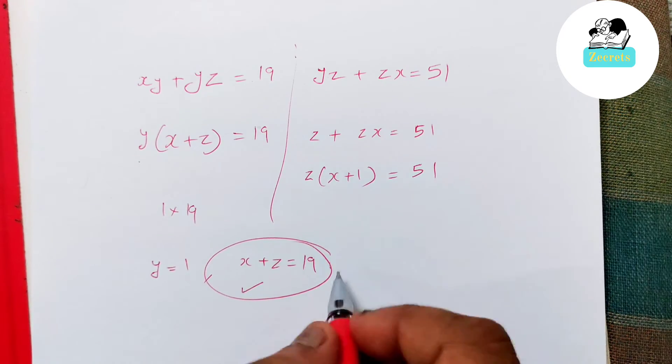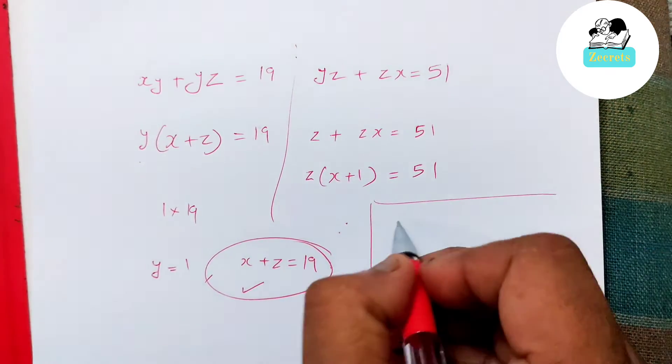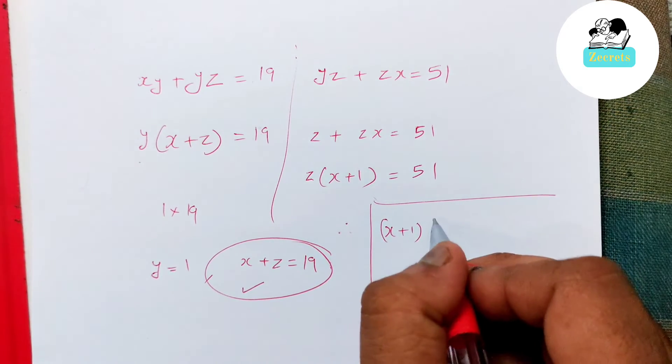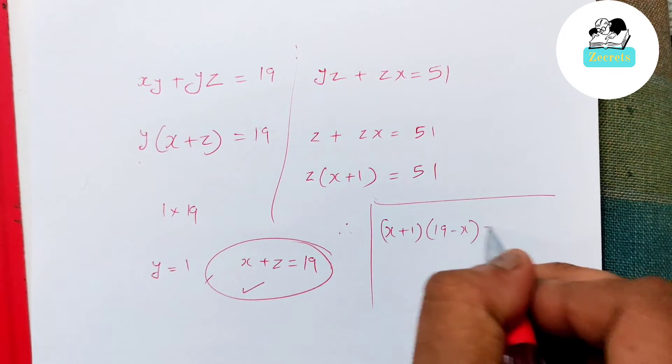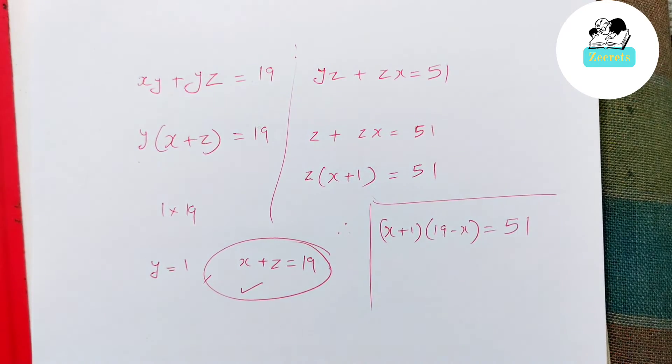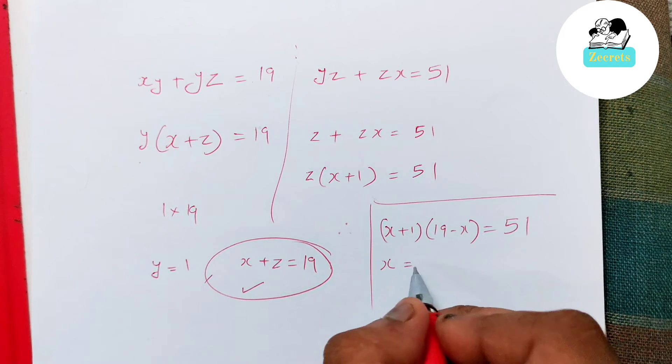So z can be replaced in terms of x. Z can be written as 19 minus x clearly. So I get a quadratic equation: (x plus 1) already there and z written as (19 minus x) equals 51. When I solve this equation, I get two values for x.